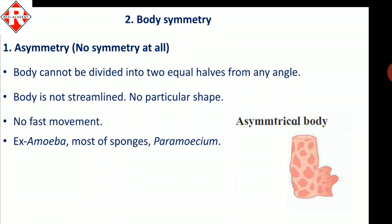The next criterion is body symmetry. The first type is asymmetry — there is no symmetry at all. The body cannot be divided into two equal halves from any angle. The body is not streamlined and does not have a particular shape, so this animal cannot move fast. Examples are amoeba, most sponges, and paramecium.